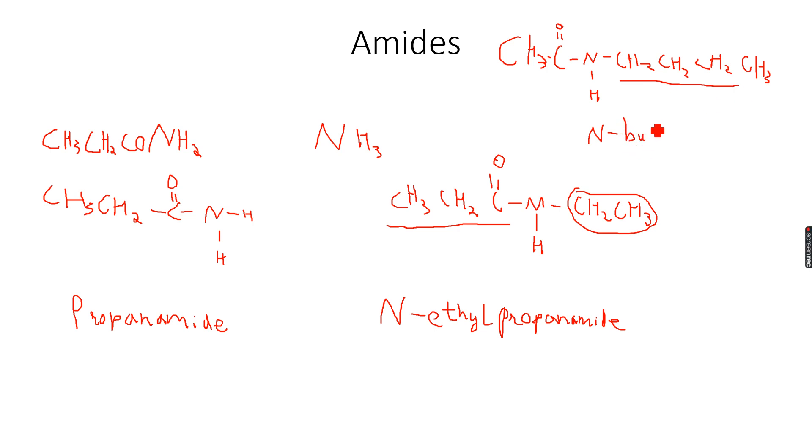It will be N-butyl ethanamide because two carbons means eth, so ethanamide. That is how the naming of disubstituted amides is done. This group which I have marked in dotted lines is called the amide group, the amide link - it's the functional group of these molecules.